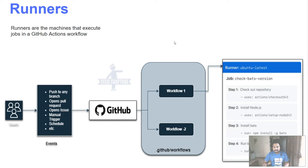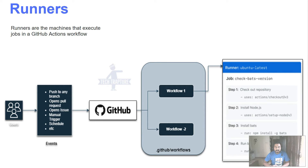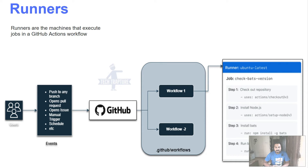Runners are the machines that execute jobs in a GitHub Action workflow. A GitHub Action workflow is a set of jobs, and a job is a set of steps - commands which can be executed on machines. But where will this workflow run? These commands execute on the runners. For example, if we have Terraform code to deploy infrastructure on Google Cloud or AWS, the Terraform init, plan, and apply commands will execute on a runner.